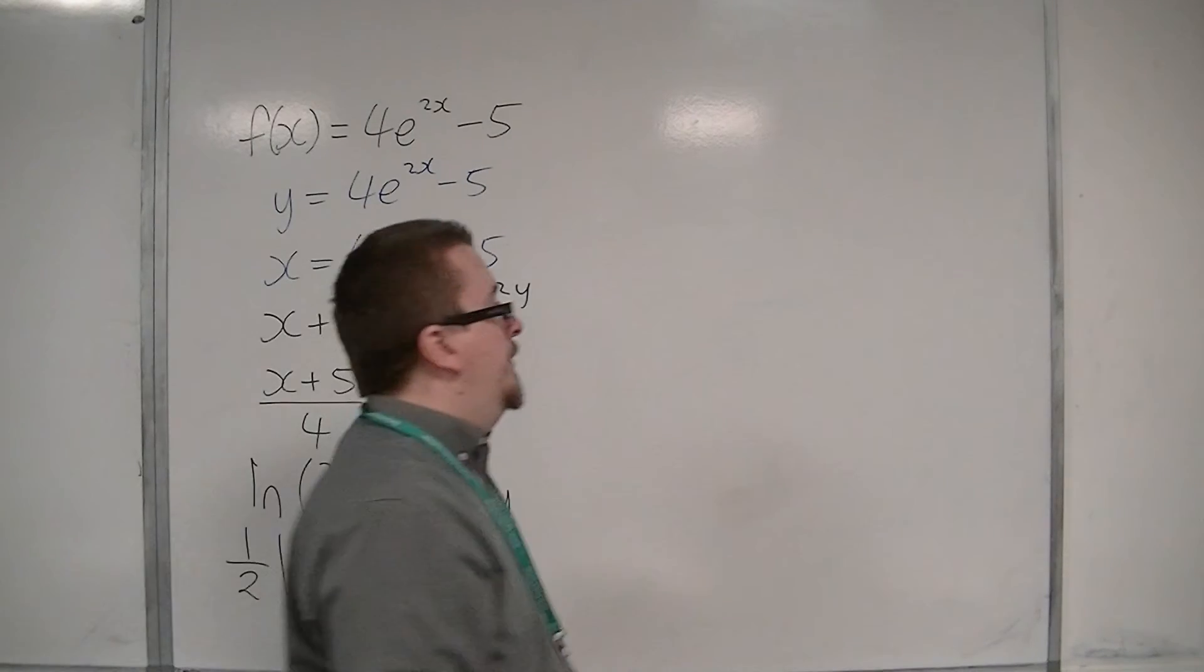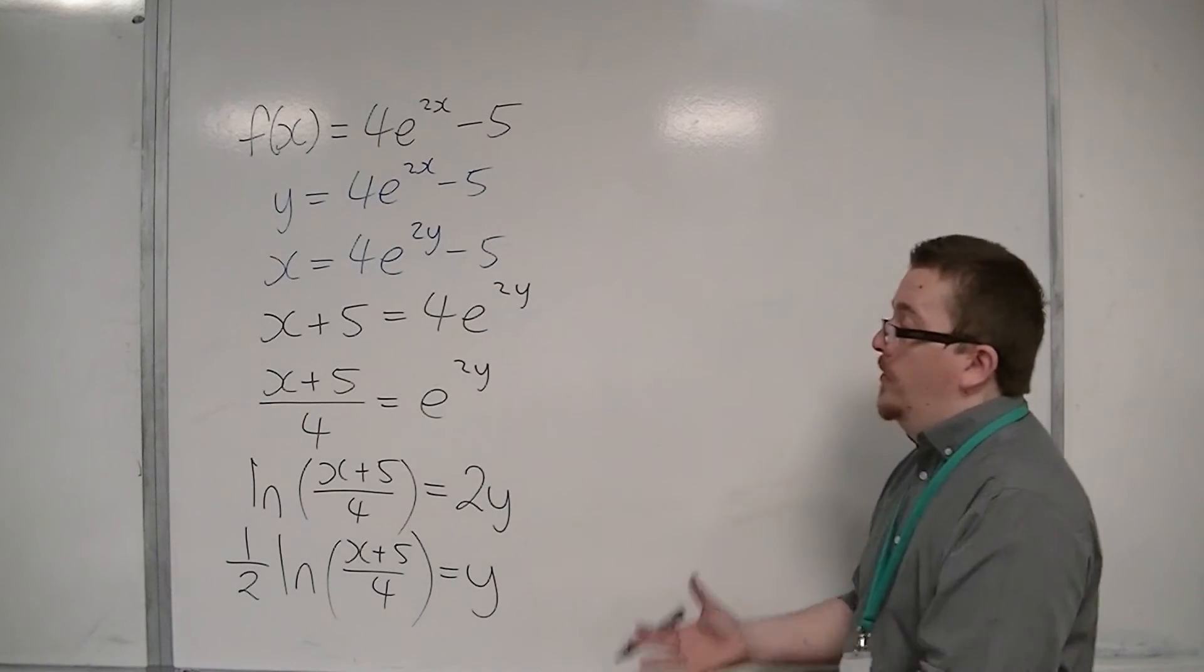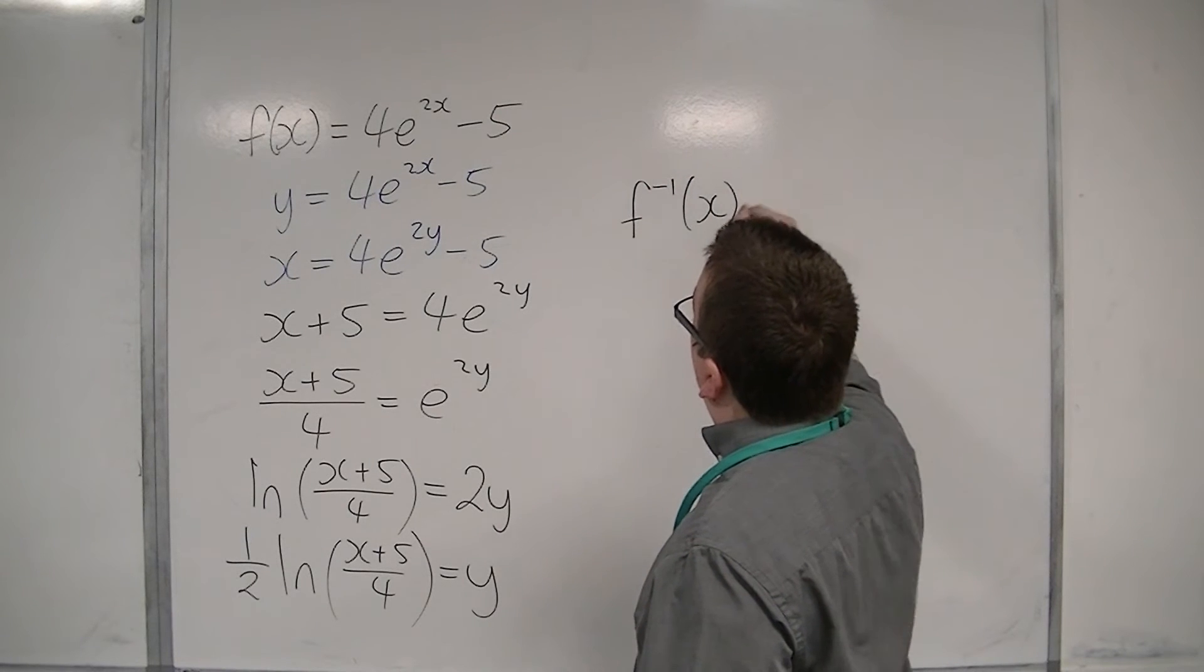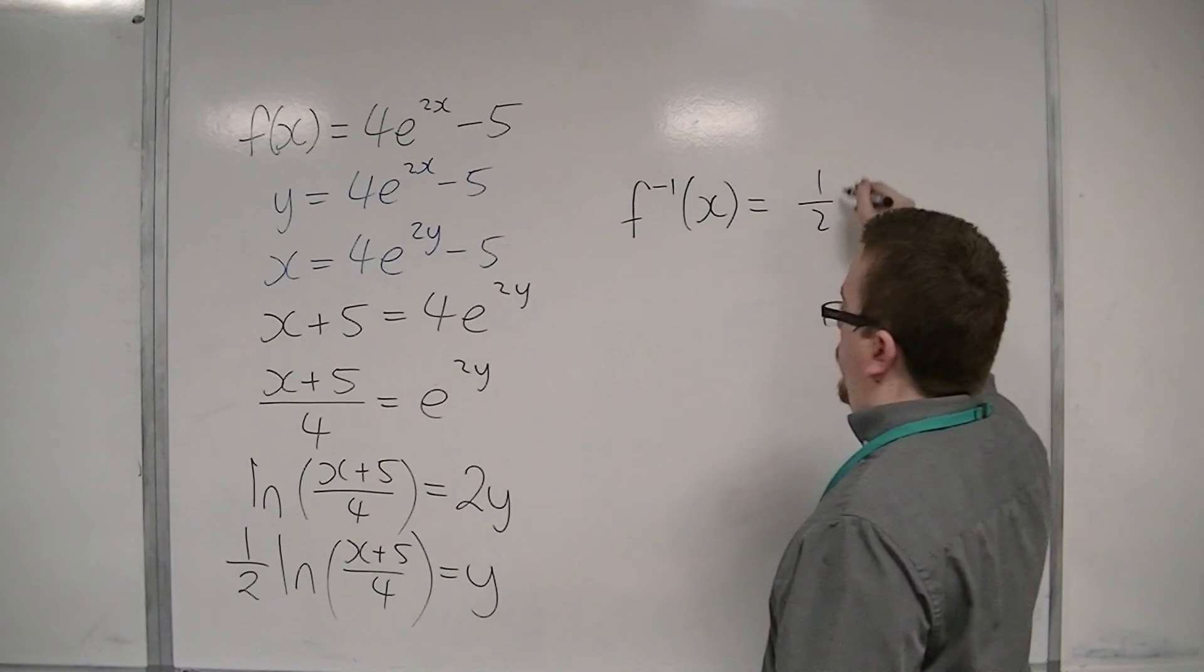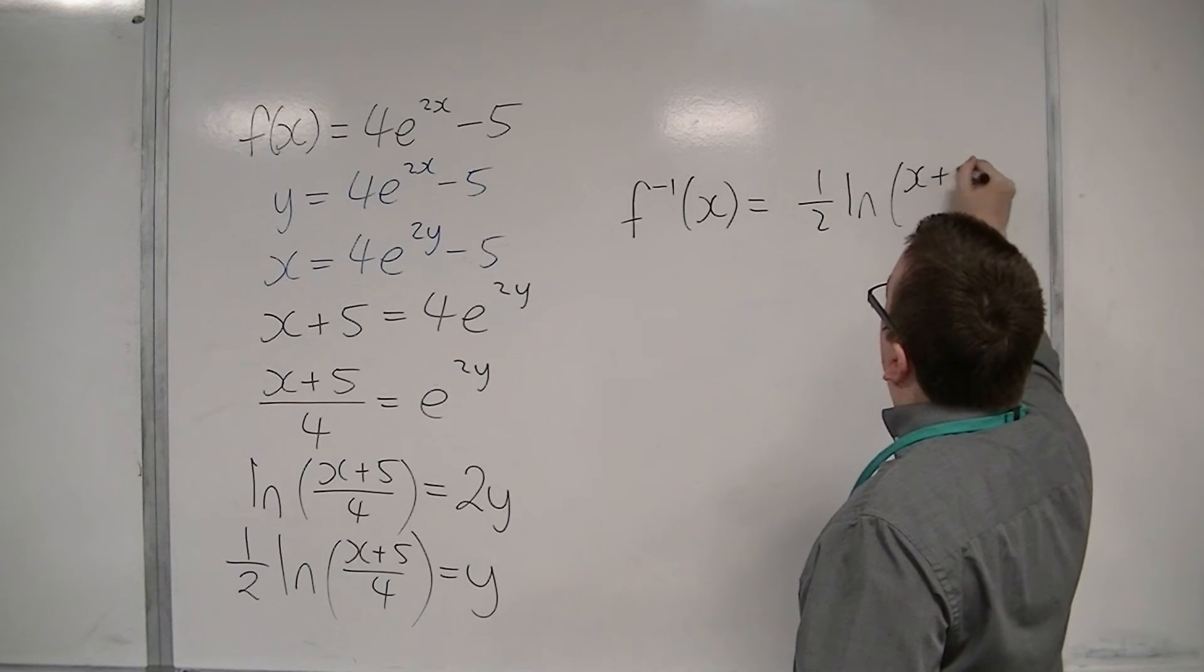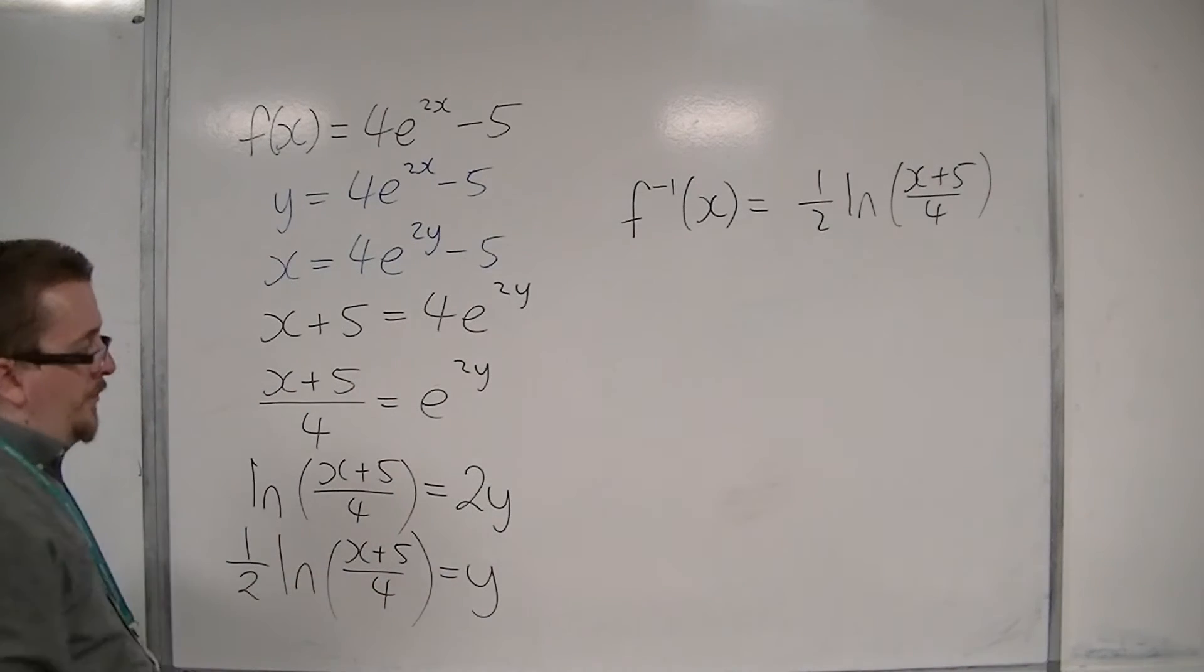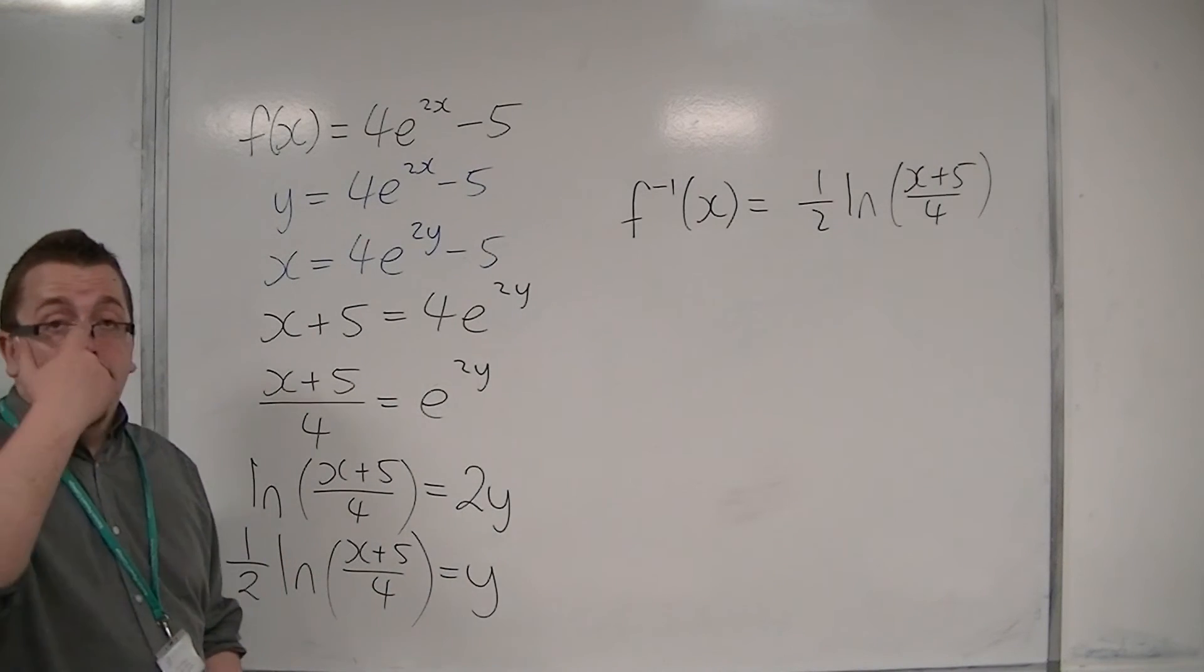So we now have y equals. And so, finally, we can then say the inverse function of x is 1 half log of x plus 5 over 4. So whatever you get y to be equal to here, that is your inverse function.